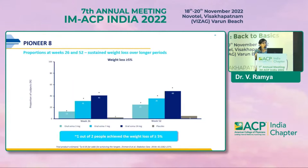Pioneer trial 8 compared different doses of oral semaglutide with insulin over a complete year. At the end of 26 weeks and at the end of 52 weeks, there was a sustained weight loss — which is what we need, not just acute weight loss. One out of two people achieved weight loss of 5%, and this weight loss was sustained.